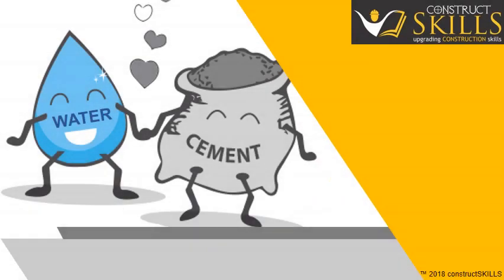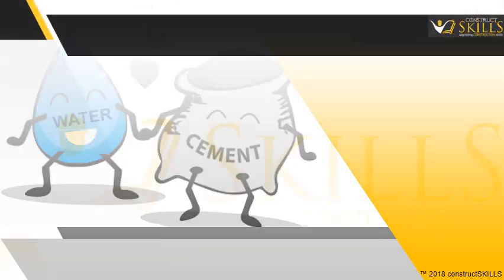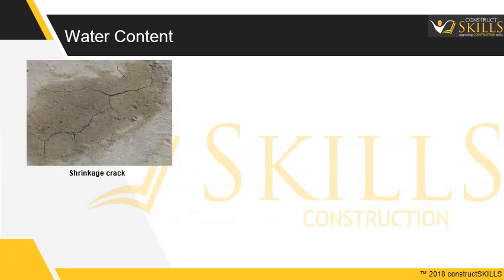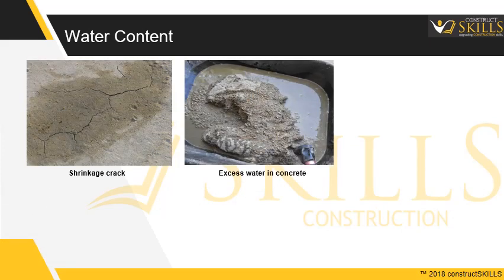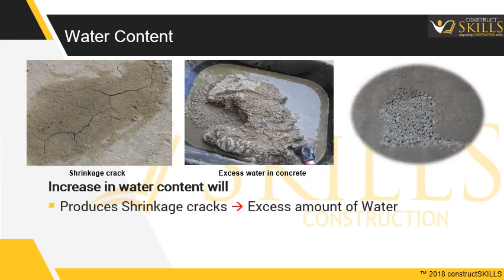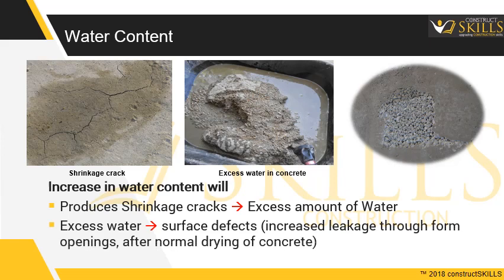In this guide, we are going to discuss one of the most important factors while manufacturing concrete: the water cement ratio. The primary cause of drying shrinkage cracks is an excessive amount of water in the mix. Increasing water cement ratio weakens the concrete, and excess water tends to aggravate surface defects by increased leakage through form openings after normal drying of concrete.